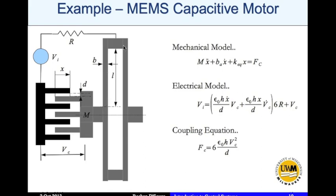These are leaf springs right here, and this is the proof mass. The mechanical model derived previously is given by: m*x_double_dot + ba*x_dot + k_equivalent*x = fc. Here fc is the force due to the capacitive action, ba is the damping due to air (air resistance), and k_equivalent is the equivalent spring constant of the four leaf springs.